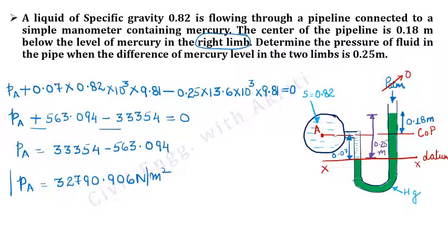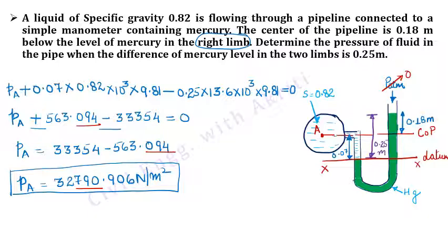Keep in mind that the more decimal places you include in your calculation, the more accurate your answer will be. This value can change if you reduce the number of decimal places. I prefer that you go to at least 3 decimal places, as that increases the accuracy. So let's look at the next question.